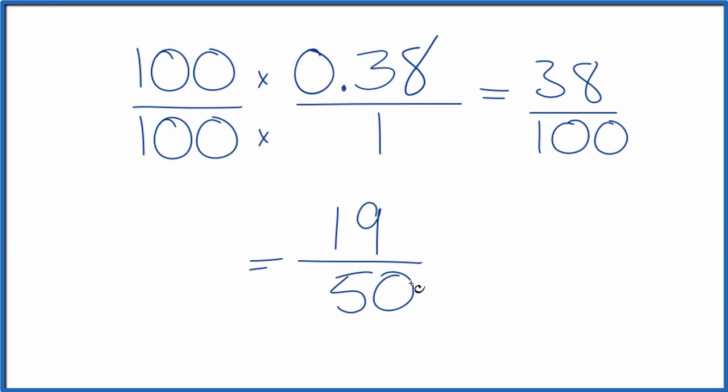We can't simplify this any further. If you divide 19 by 50 or 38 by 100, you'll end up with a decimal, 0.38. It's just that these are in fraction form. This is Dr. B. Thanks for watching.